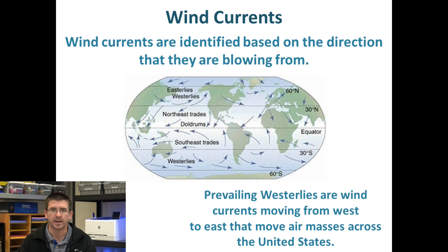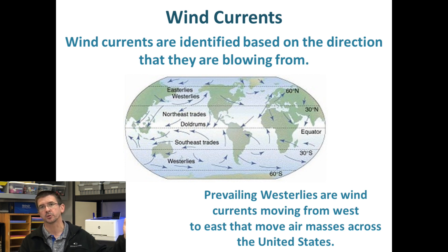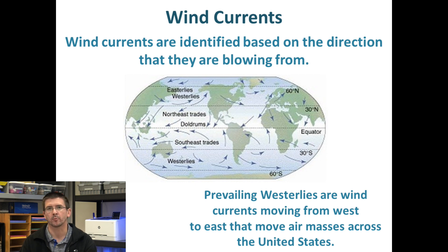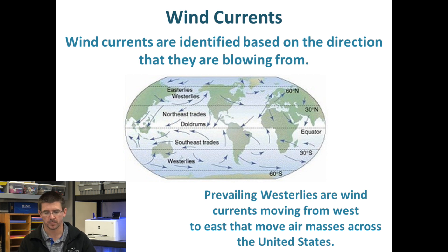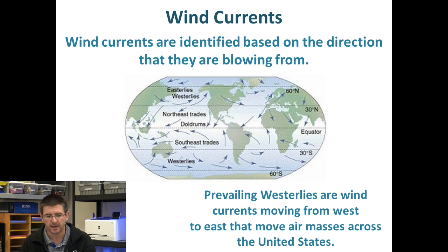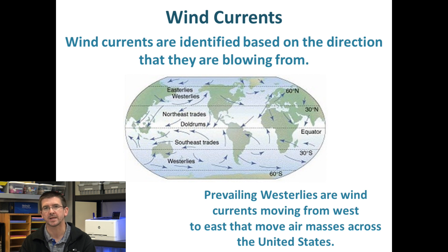In the United States, the important wind currents are the prevailing westerlies, because they actually move weather from the west coast eastward. When we name a wind current, we name it based on the direction it's blowing from — the westerly wind blows from the west and carries weather to the east. Similarly, a southeast trade wind would blow from the southeast, and an easterly wind would blow from the east to the west. So the name of the wind current tells you its direction.